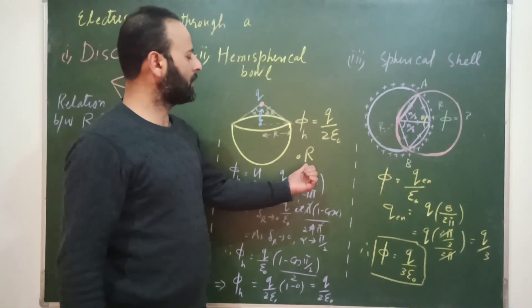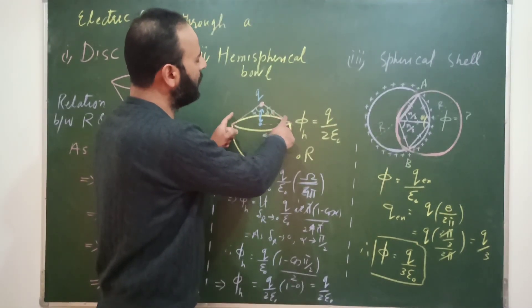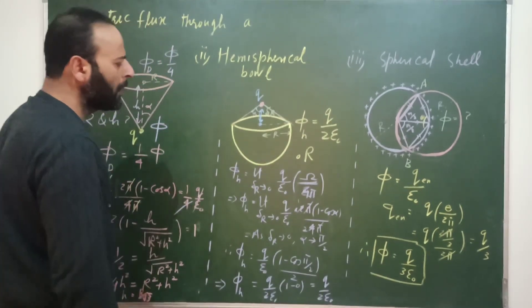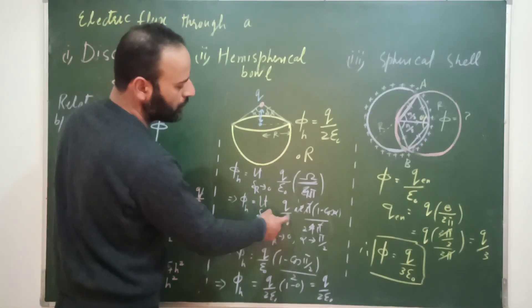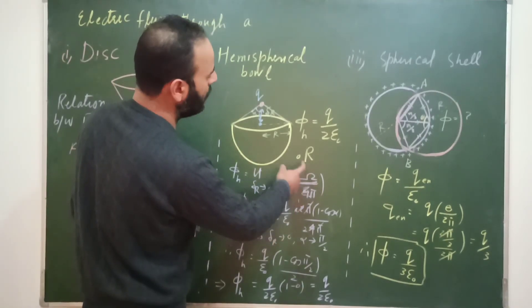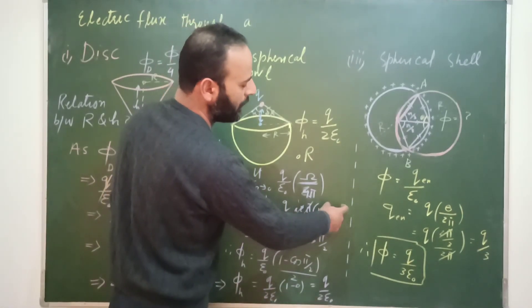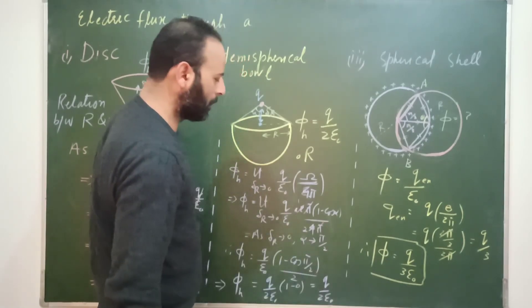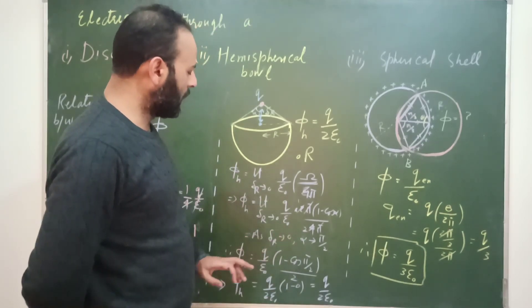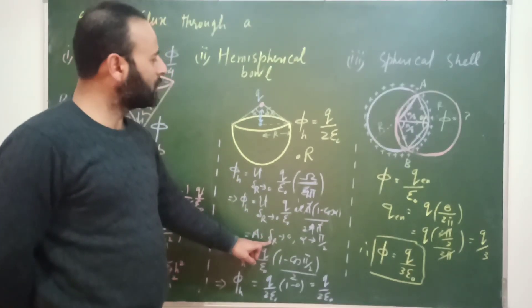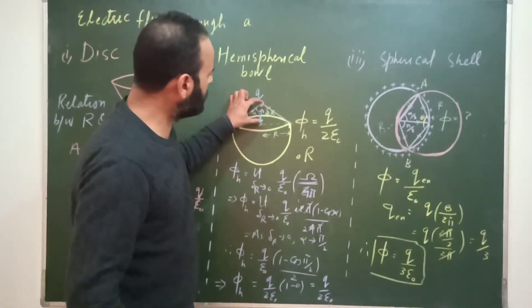Using the solid angle method: the flux through the hemispherical bowl equals (Q/ε₀) times the solid angle subtended divided by 4π. The solid angle subtended by the base of the hemispherical bowl is 2π(1 − cos α), same as for the disc. After canceling π terms, we get φ_h = (Q/ε₀)(1 − cos α)/2, evaluated in the limit as δr → 0.